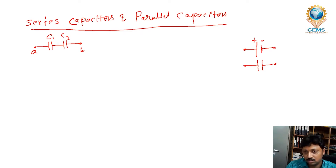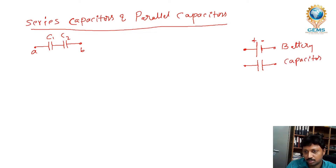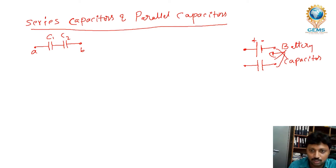In a capacitor, both plates should be the same size and height. This is the battery symbol, and this one is for the capacitor. Sometimes students draw the capacitor symbol incorrectly — that is wrong. You have to remember this.